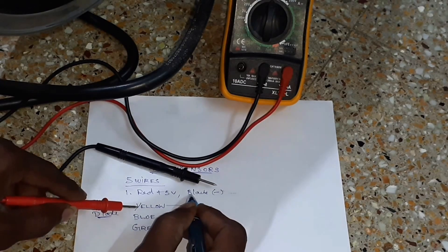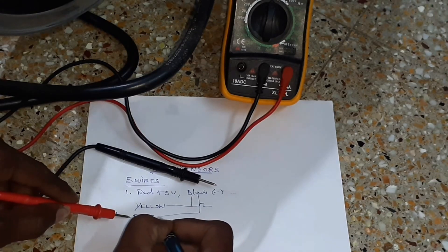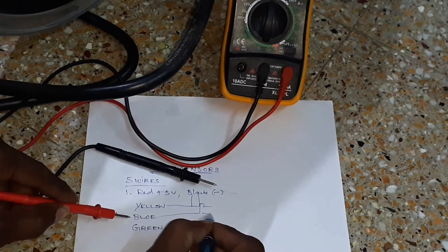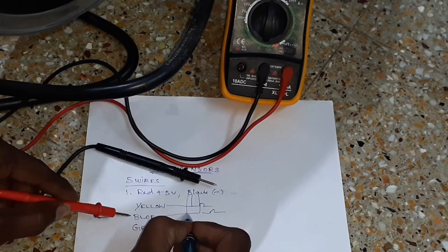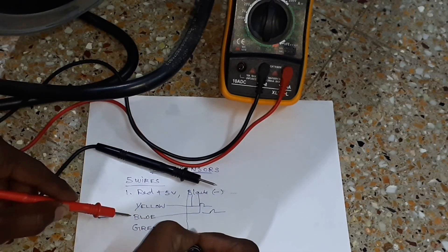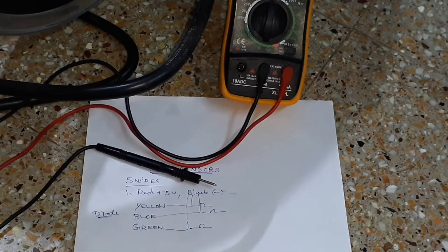If you look at that, you can see the black cable and the blue cable. If you look at the black cable, you can see the green cable. You can see the ohms. The ohms is correct, so the hall sensor is perfect.